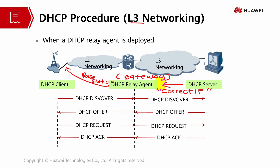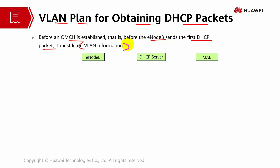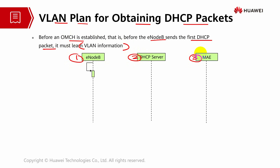There will then be an acknowledgement about the information being transferred. Moving to the next section - this covers the VLAN plan for obtaining packets. Before an OM channel is established, that is before the eNodeB sends the first DHCP packet, it must learn about the VLAN information. VLAN is important for broadcasting and to avoid congestion of packets. This communication happens between a few modules: eNodeB, DHCP server, and MAE. Once the base station is powered on and self-detected, VLAN networking has to be configured.